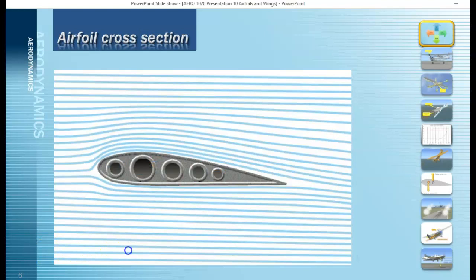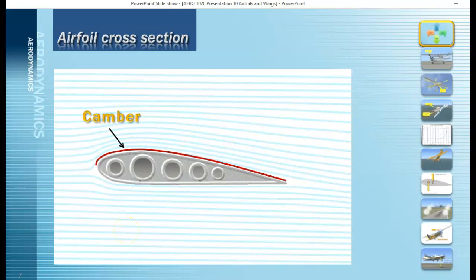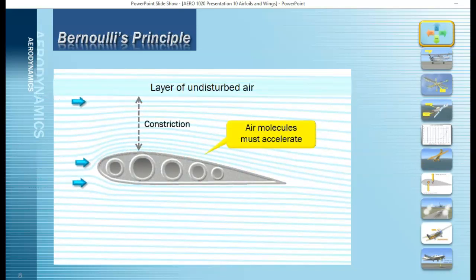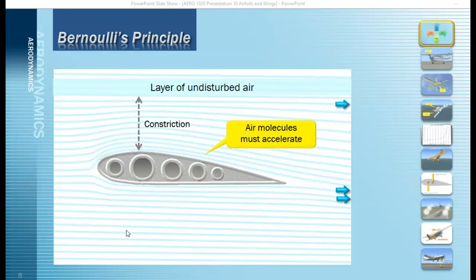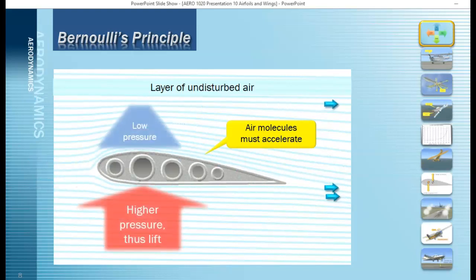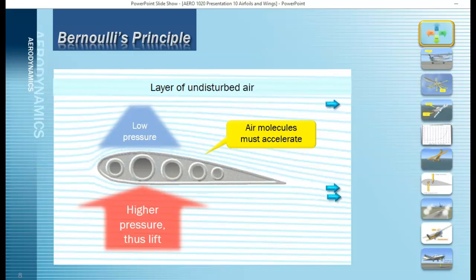Here's a cross section of an airfoil. One of the first terms we'll discuss is camber — the curvature of the upper surface of the airfoil. The airfoil is designed with that curvature to accelerate air molecules that flow over the top. Because of the camber, there's more surface area on top, so the air flowing over it accelerates to keep up with the air flowing underneath. Because of that acceleration, due to Bernoulli's Principle, the pressure at the top of the airfoil is reduced.